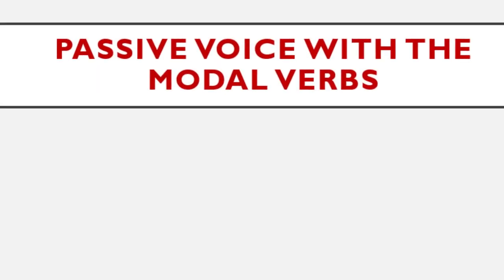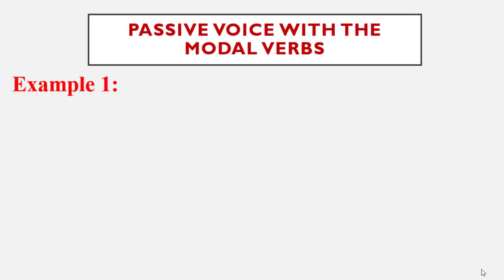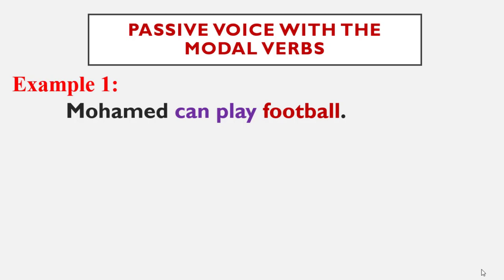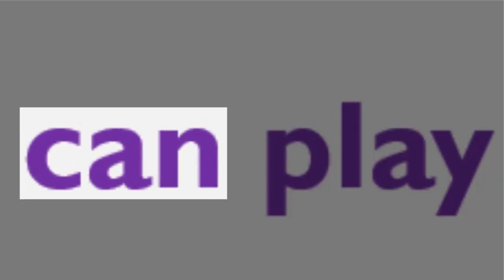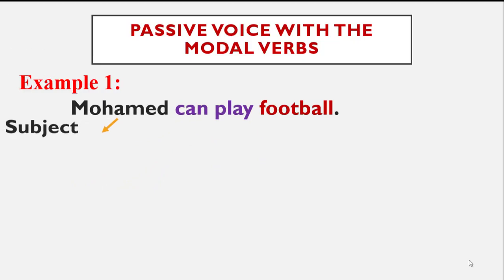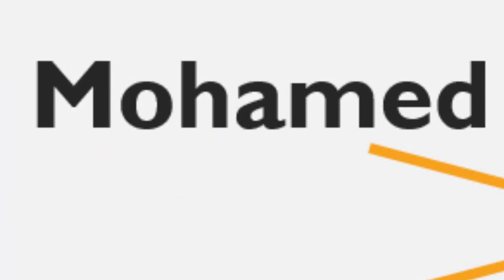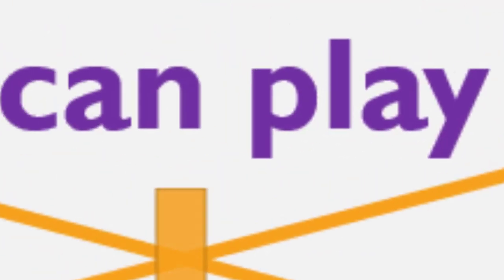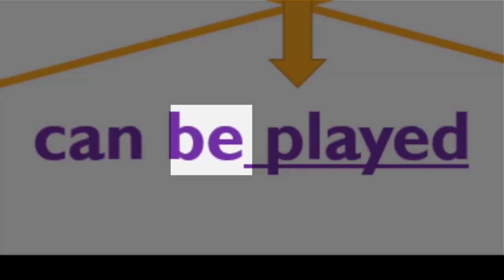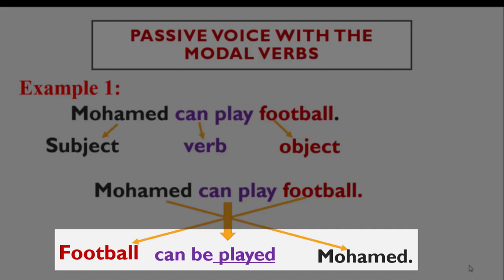Now we reach the fifth situation: passive voice with modal verbs. Modal verbs include can, must, should, have to, has to, etc. Example: Mohammed can play football. Mohammed is the subject, can is the modal verb, play is the main verb, and football is the object. Football becomes the subject and Mohammed becomes the object. With modal verbs we always add be — for example: can becomes can be, should becomes should be, must becomes must be. Be is inserted between the modal verb and the past participle.